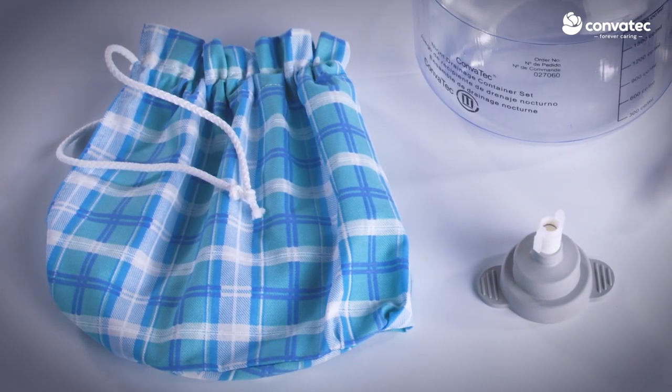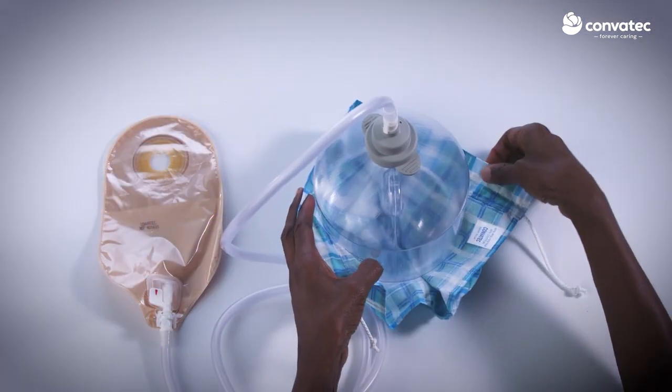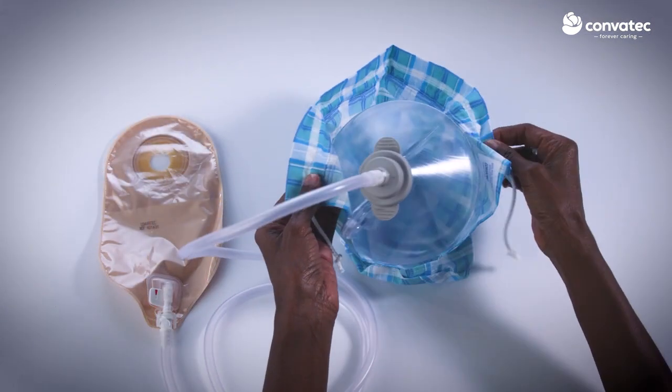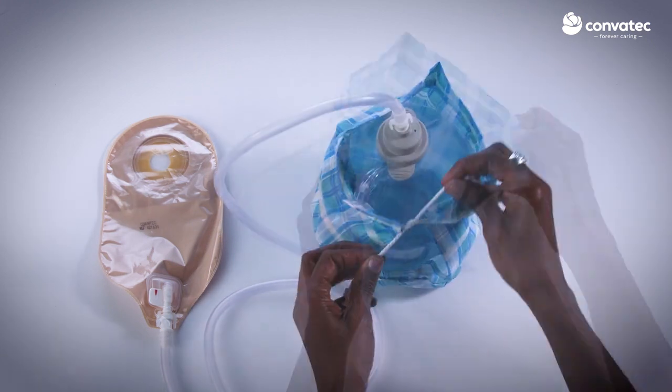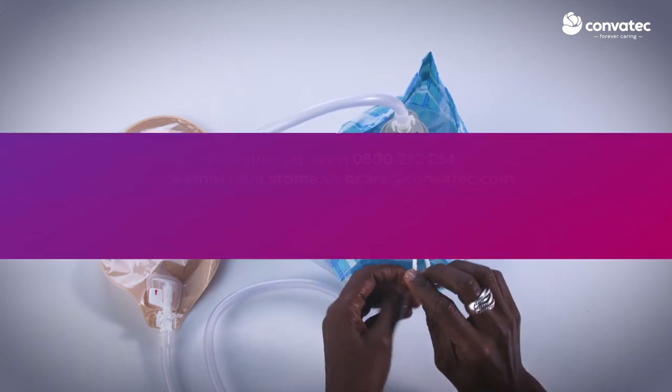Included with the system is a cloth covering for discretion. Simply lift the container and slip the cloth covering on, starting at the bottom. Tighten the drawstring and tie together to cover the container.